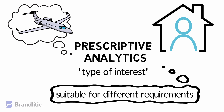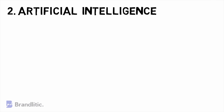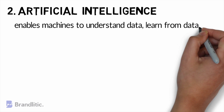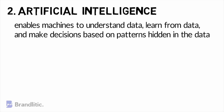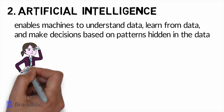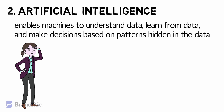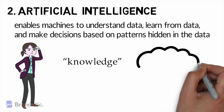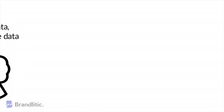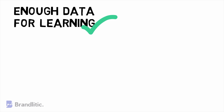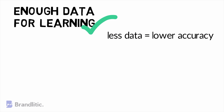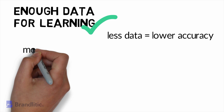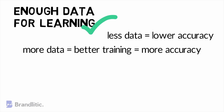You might be wondering — that sounds a lot like artificial intelligence. And you're not entirely wrong. Number 2: Artificial Intelligence. AI is the ability that can be imparted to computers which enables machines to understand data, learn from data, and make decisions based on patterns hidden in the data — or inferences that could otherwise be very difficult or almost impossible for humans to make manually. AI also enables machines to adjust their knowledge based on new inputs that were not part of the training data. But you need to make sure you have enough data for AI to learn from. If you have a very small data lake, the accuracy of the prediction could be very low. More data means better training of the AI model and more accurate outcomes.